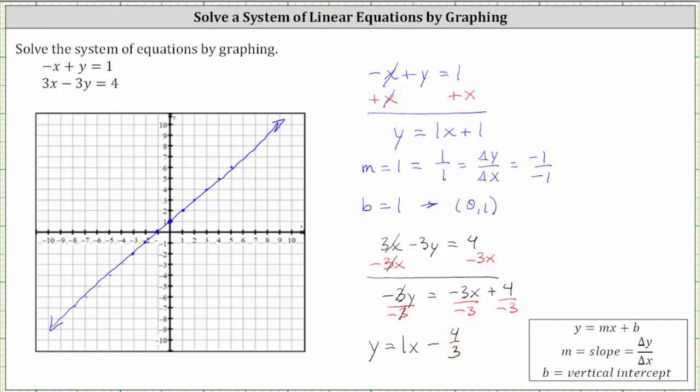Notice how for the second line, the slope is also positive one, or positive one over positive one. And b, the vertical intercept, is now negative four thirds, which gives us the ordered pair zero comma negative four thirds. The important thing to recognize here is that the slope of the second line is the same as the slope of the first line, and the vertical or y intercepts are different. Therefore, the lines are going to be parallel. They will not intersect.